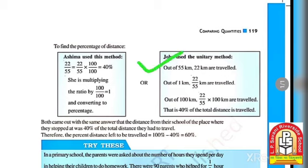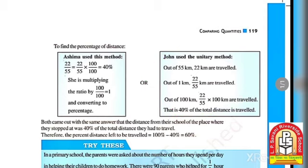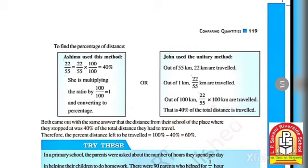John used the unitary method: out of 55 km, 22 km are traveled; out of 100 km, 22/55 × 100 = 40 km are traveled. So 40% of the total distance is covered. Therefore, the percentage of distance left to travel = 100 − 40 = 60%. In this way you can find any ratio and convert it to a percentage.